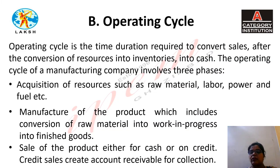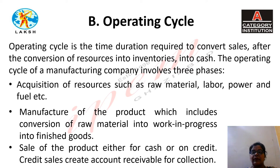The second concept of working capital is the operating cycle. Operating cycle is the time duration required to convert sales, after the conversion of resources into inventories, into cash. The operating cycle of a manufacturing company involves three phases: acquisition of resources such as raw material, labor, power and fuel; manufacture of the product, which includes conversion of raw material into work-in-progress into finished goods; and sale of the product either for cash or on credit. Credit sales create accounts receivable for collection.